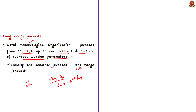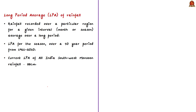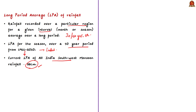The Long Period Average (LPA) of rainfall is the average rainfall recorded over a particular region for a given time interval — 30 years or 50 years. The LPA for the season is calculated on the basis of mean rainfall during the four-month monsoon season for a 50-year period from 1961 to 2010. The current LPA of all-India southwest monsoon rainfall is about 88 centimeters, and it acts as a benchmark while forecasting quantitative rainfall.